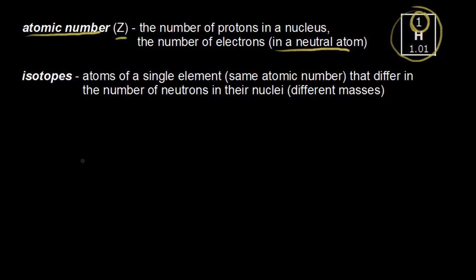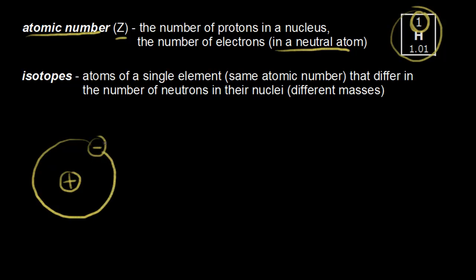Let's draw an atom of hydrogen. The atomic number of hydrogen is one, so there's one proton in the nucleus. And since we're talking about a neutral hydrogen atom, there's one electron. I'm going to draw that electron outside the nucleus using the oversimplified Bohr model. This isn't actually what an atom looks like, but it's a simple view that helps you get started.